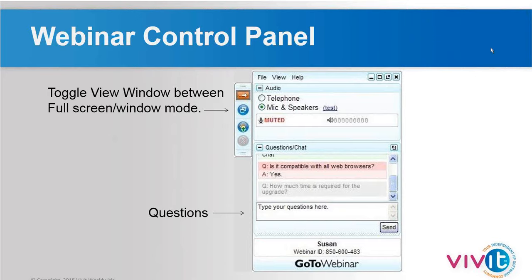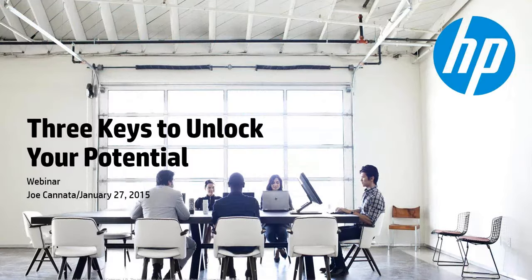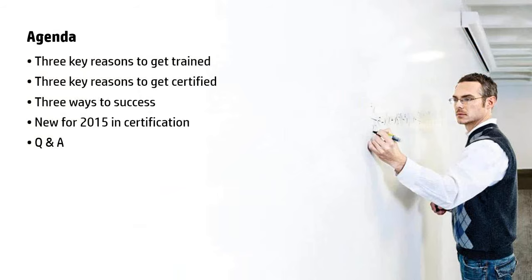Hello and welcome everybody. Today I'd like to talk to you about three keys to unlock your potential. Here's our agenda: first, we'll talk about three key reasons to get trained; then three key reasons to get certified; then three ways you can achieve success. I'd also like to give you some new announcements for the certification program that will be happening in 2015. We've got some exciting things coming up shortly, and then we'll have time for questions and answers.